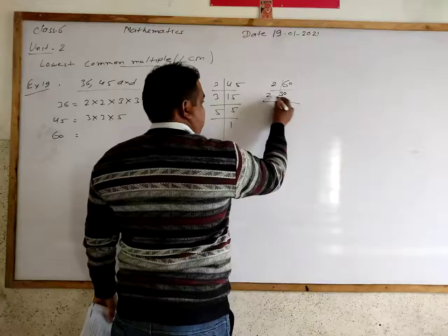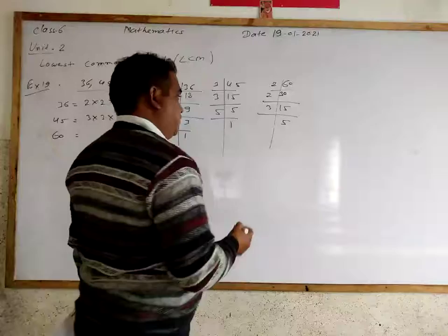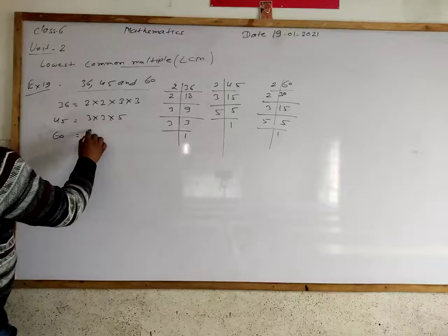For 60, we divide by 2, we get 30. Again divide by 2, we get 15. Divide by 3, we get 5. We divide by 5, we get 1.